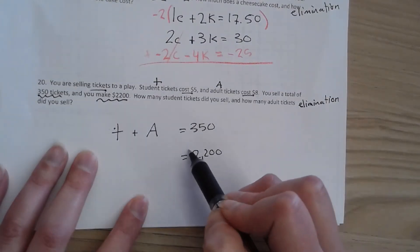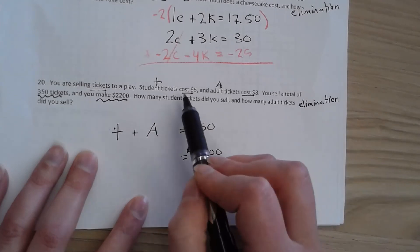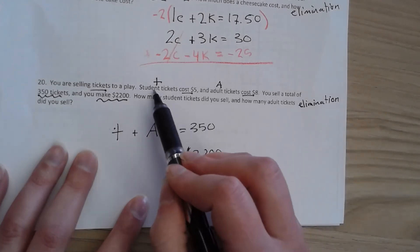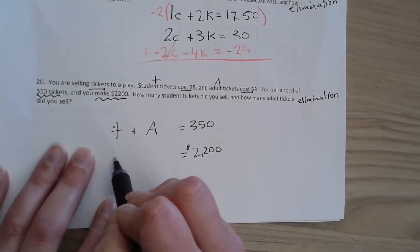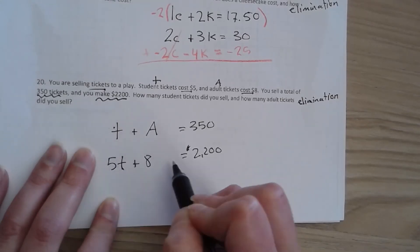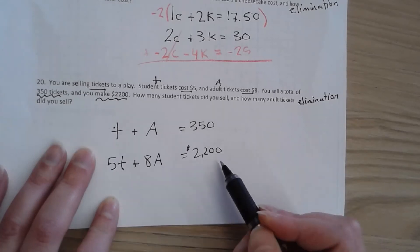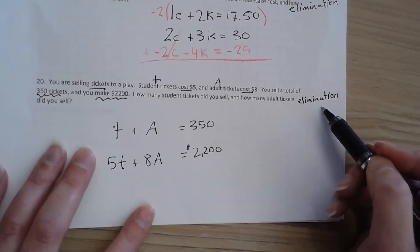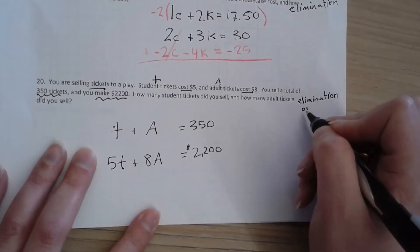The second total is talking money. So I have how much each ticket cost, students five dollars, adults eight. So five dollars per student ticket plus eight dollars per adult ticket is going to equal $2,200. So you could use elimination or substitution on this one. Both are pretty good options.